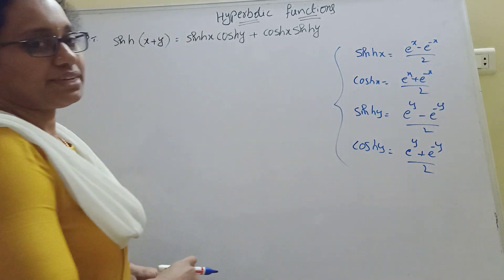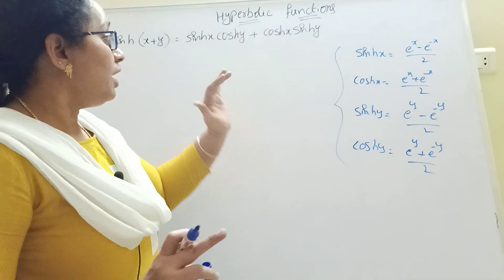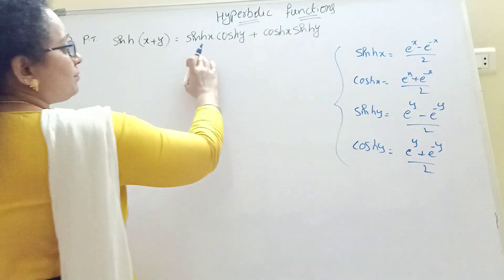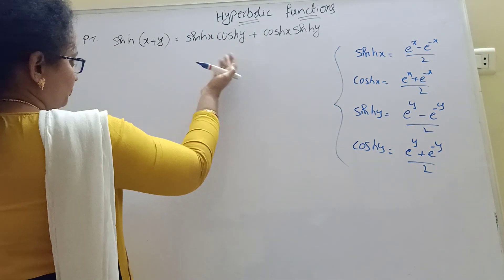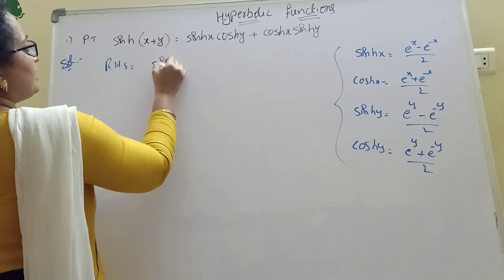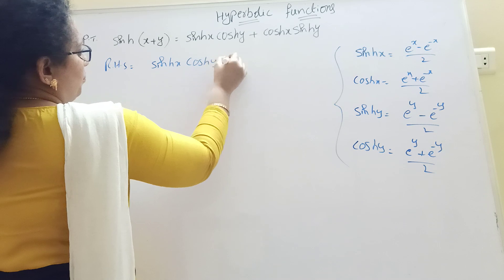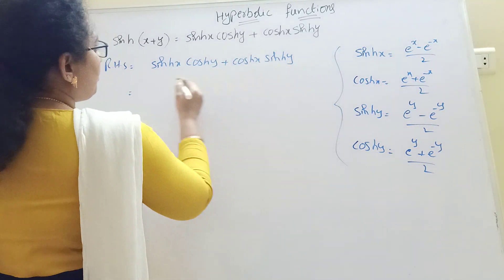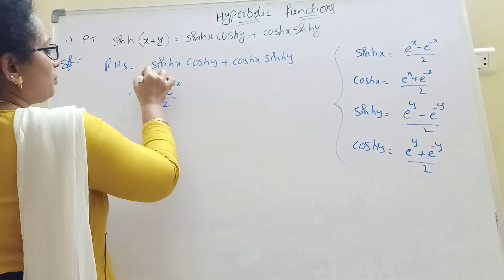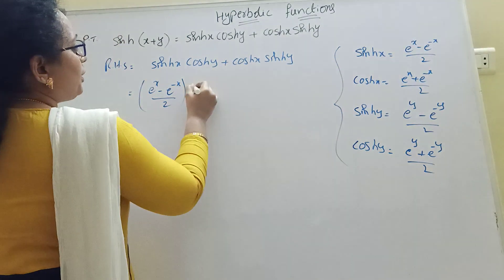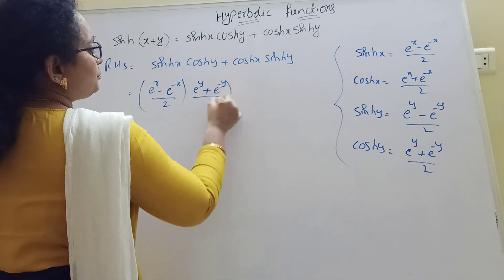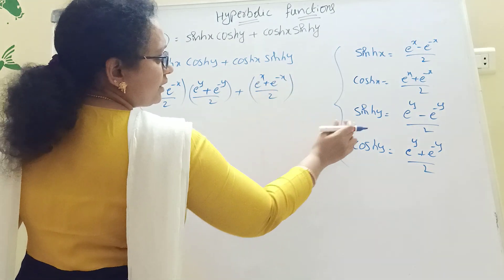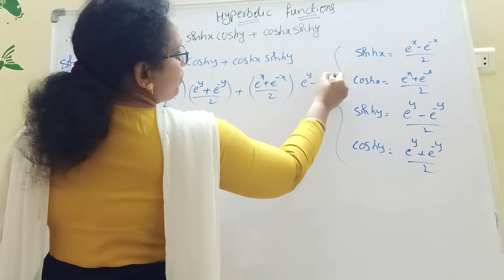Using these four formulas, you can easily solve the problem. We need to prove that sinh(x+y) = sinh(x)cosh(y) + cosh(x)sinh(y). Taking the right-hand side: sinh(x)·cosh(y) is (e^x minus e^(-x))/2 times (e^y plus e^(-y))/2, plus cosh(x)·sinh(y) which is (e^x plus e^(-x))/2 times (e^y minus e^(-y))/2.